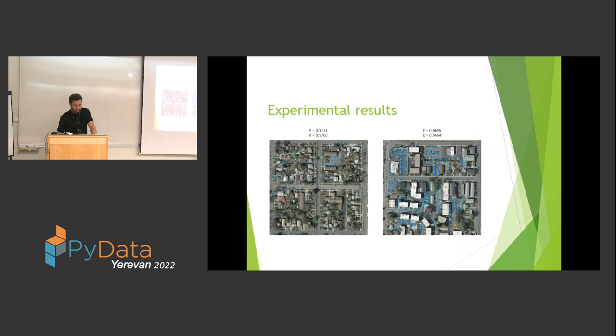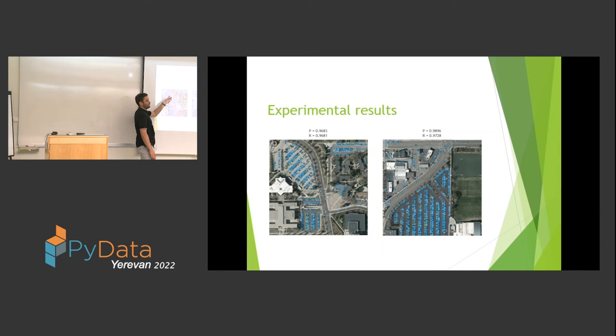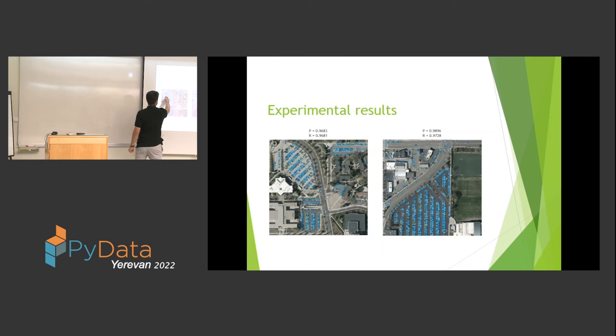Here are some examples. Blue rectangles show correct vehicle detections. Red rectangles are false positives — where the network detects a car but there isn't one. Yellow rectangles mark vehicles that the network missed — you can see them in this area here.